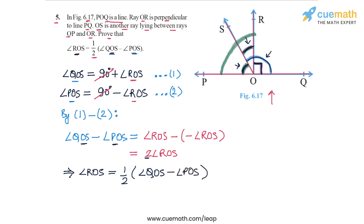That completes our proof. Angle ROS can be written as half the difference of QOS and POS, which is what we were supposed to prove. We have completed question 5 of the exercise.